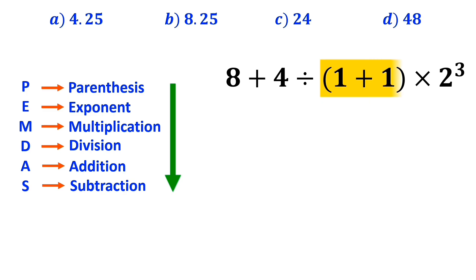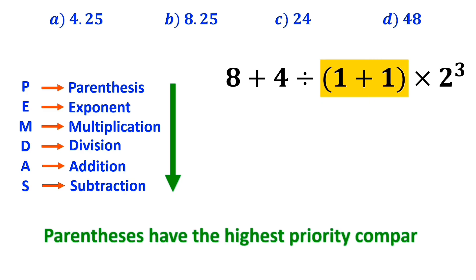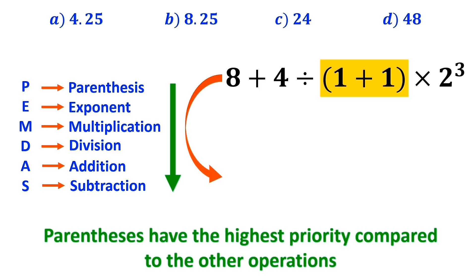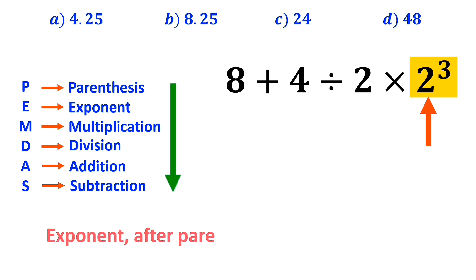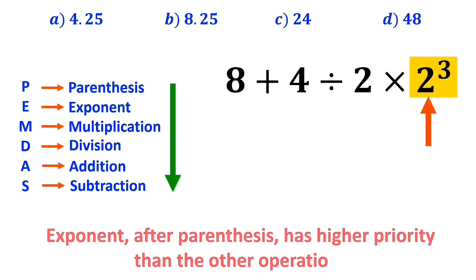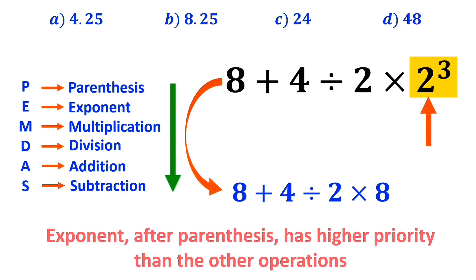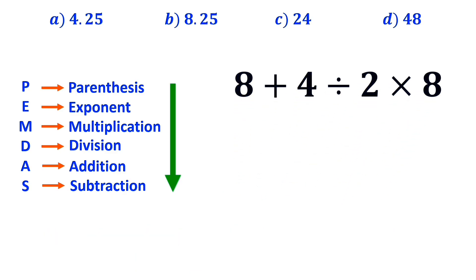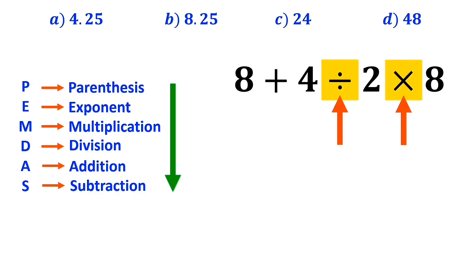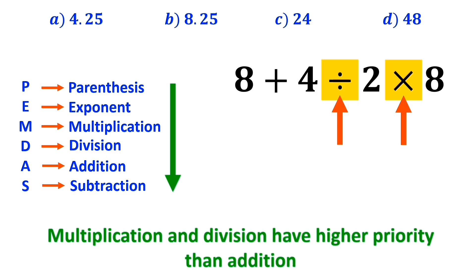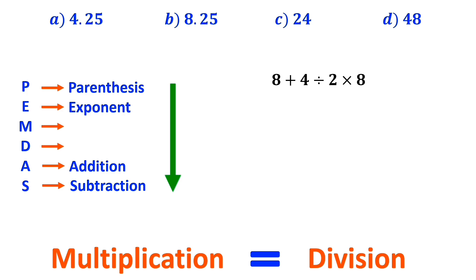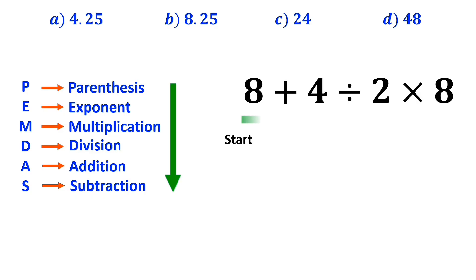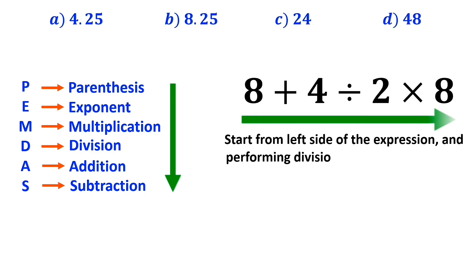We should start with the parenthesis, because parenthesis have the highest priority. So we can write 8 plus 4 divided by 2 times 2 to the power of 3. In the next step, we go to the exponent, because exponent has higher priority than the other remaining operations. This simplifies to 8 plus 4 divided by 2 times 8. Now it's time to perform the division and multiplication, since they have higher priority than addition. It's very important to remember that multiplication and division have the same level of priority, so we start from the left side of the expression.